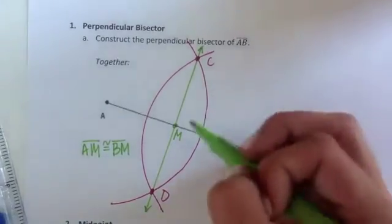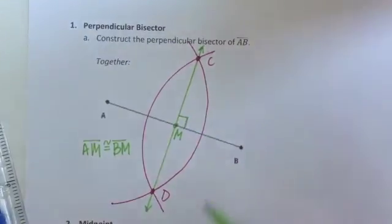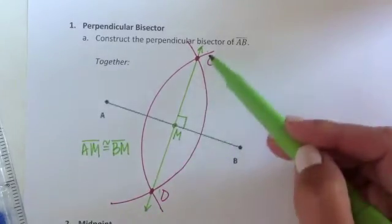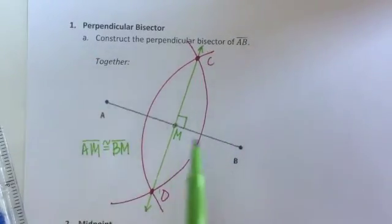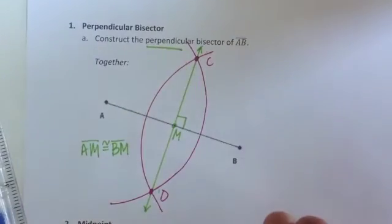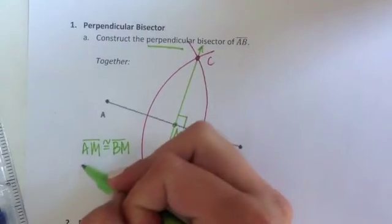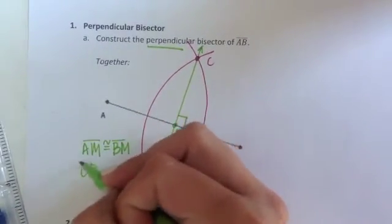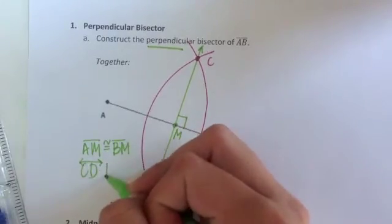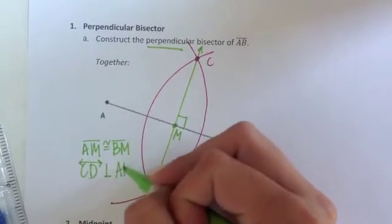The next conclusion that I can make is that I know line CD is perpendicular to segment AB. After all this was the perpendicular bisector. So line CD is perpendicular to segment AB.